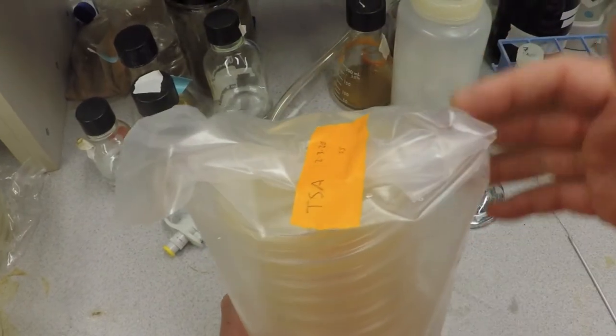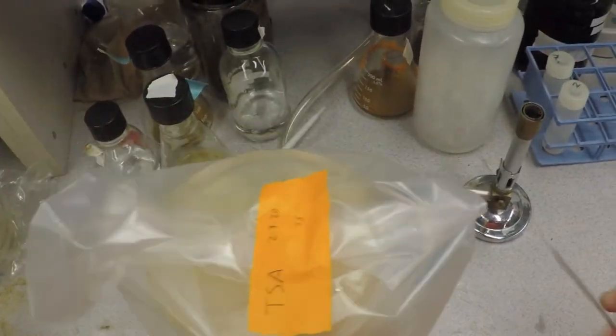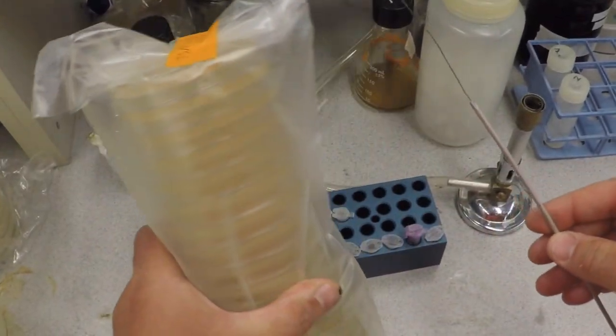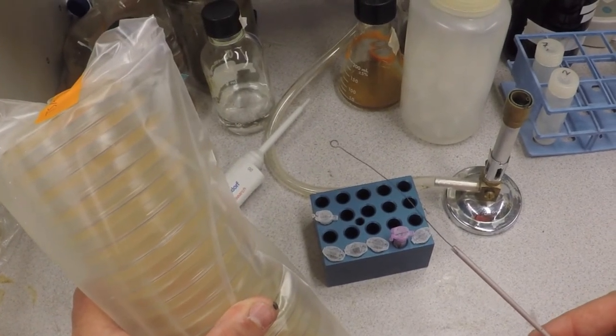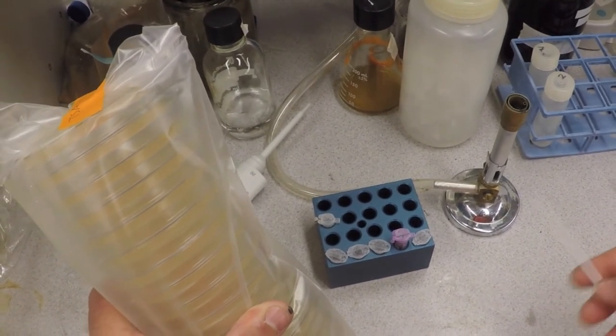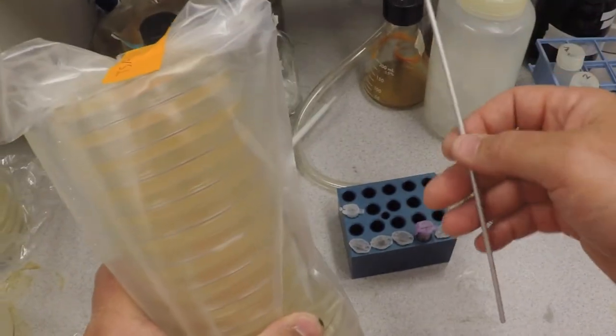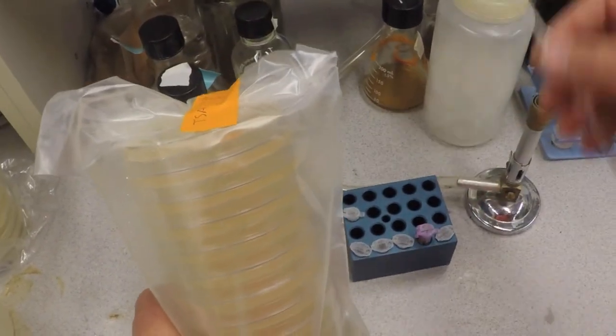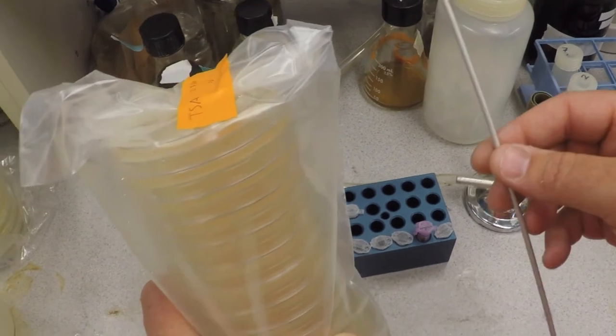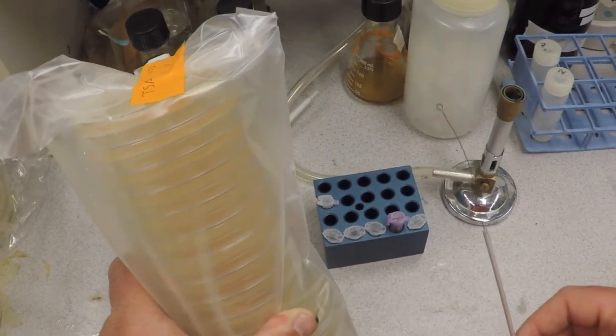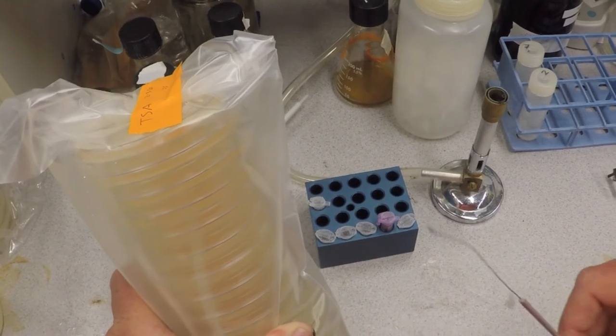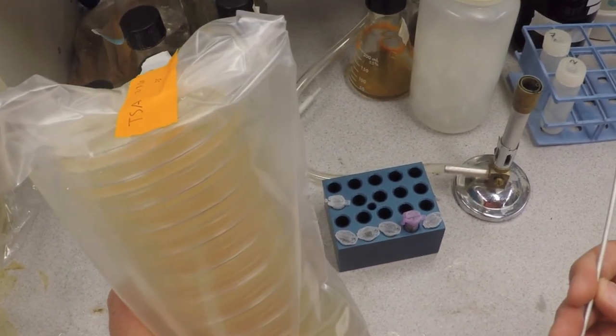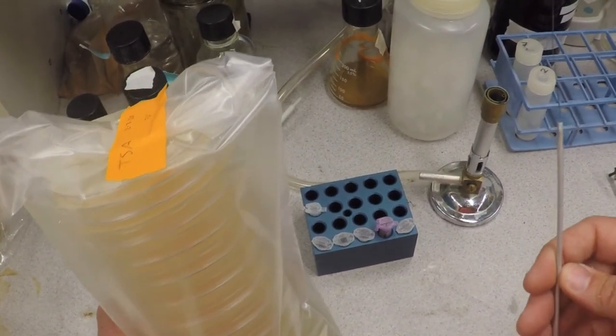We're going to be using what's called an inoculating loop, which is what this thing is. Can you see that little inoculating loop? If you accidentally touch something with this—you touch your hand, you touch the bench, you touch your phone—we're going to re-sterilize this. There's no reason to guess. You've got to just be aware of your surroundings, go relatively quickly, and know what you're going to do.